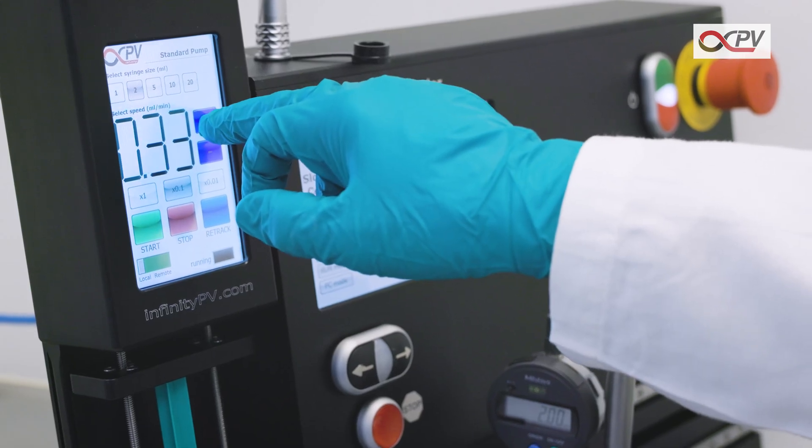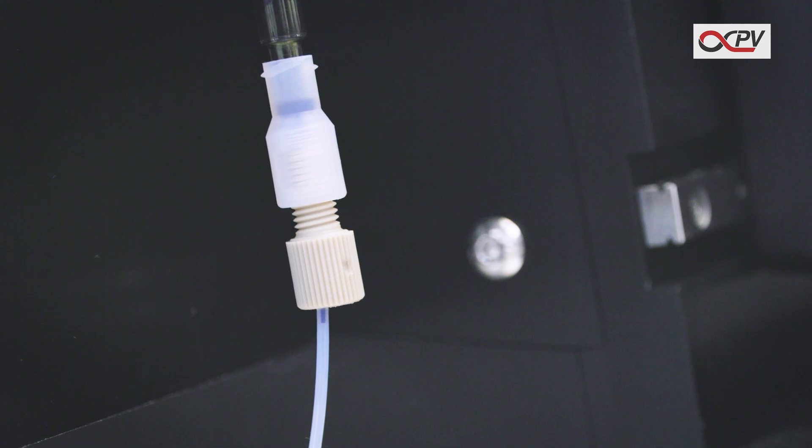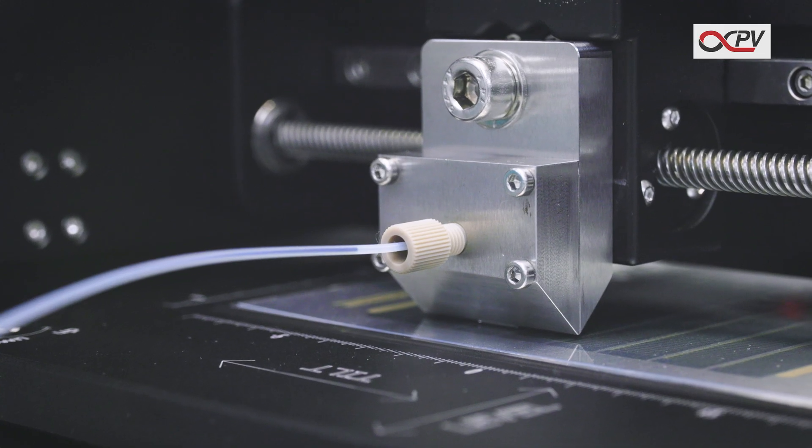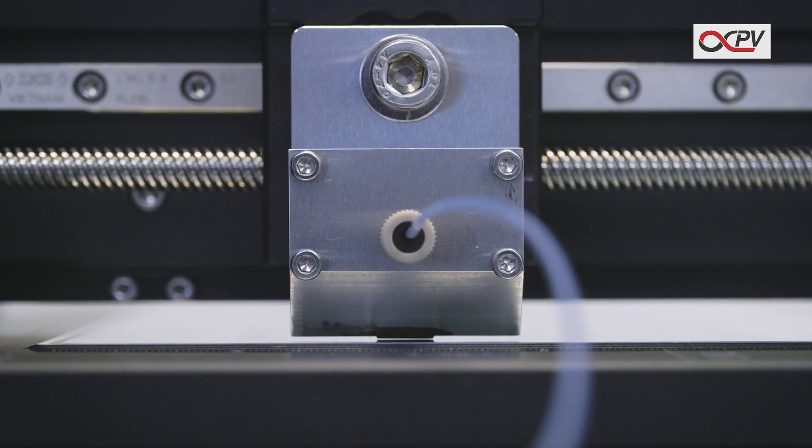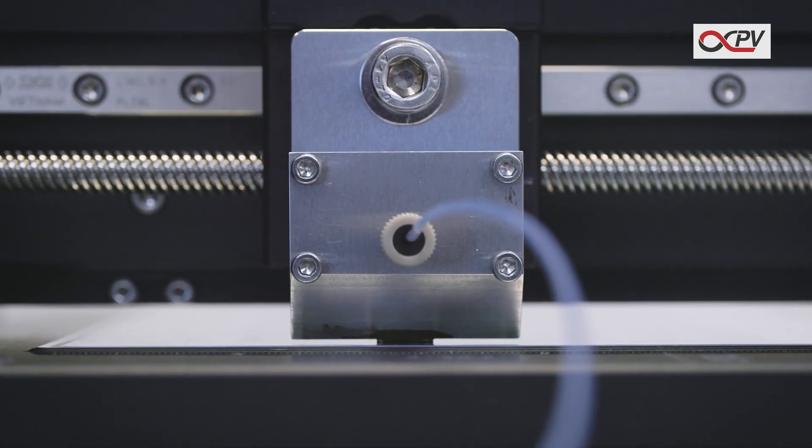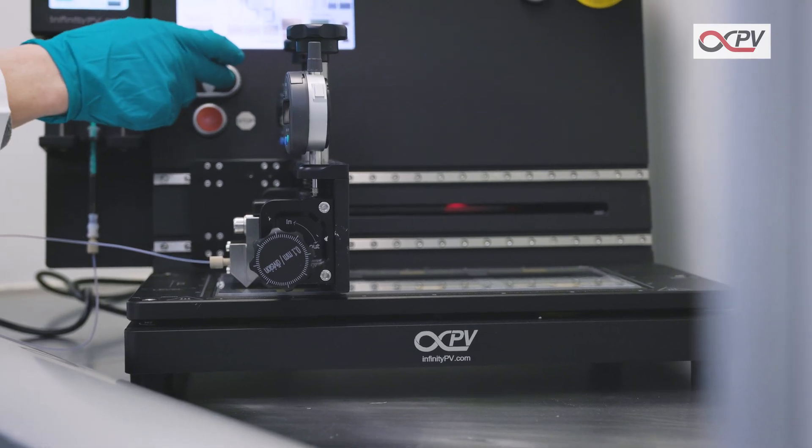Set the ink flow and start the pump. The ink will now flow from the syringe to the Slot Dye Head. Wait for the creation of the meniscus. Press the forward button to start coating.